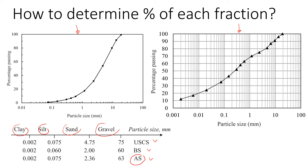The boundary between sand and gravel is 2.36 millimeters. The boundary between sand and silt is defined as 0.075 millimeters, and particles finer than 0.002 millimeters will be clay.